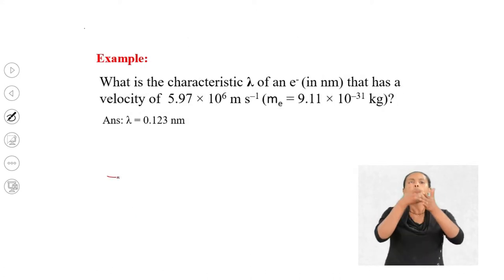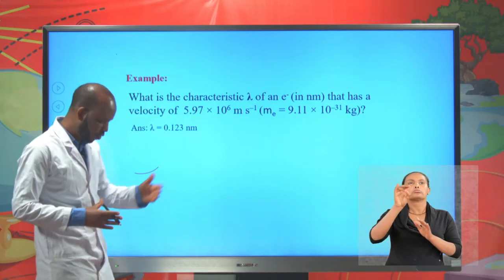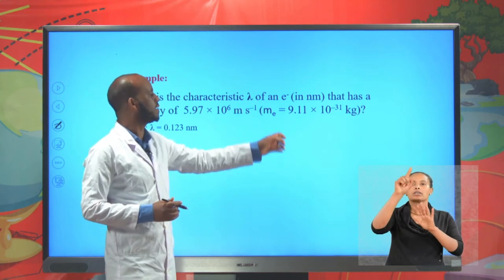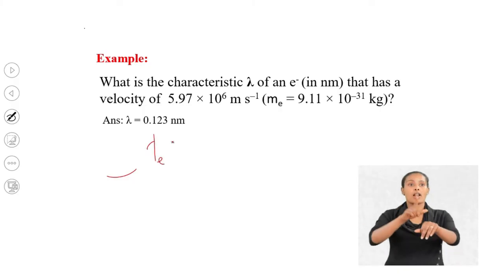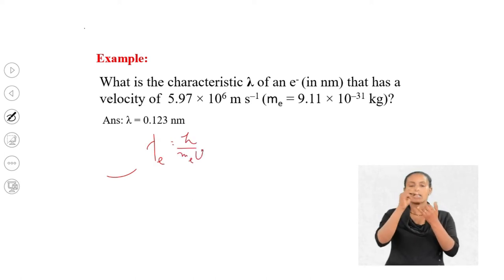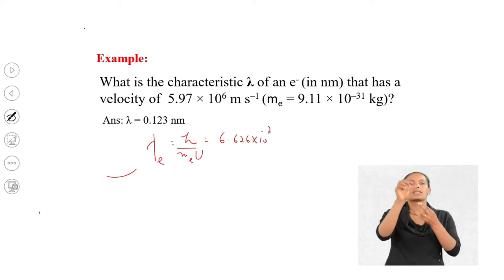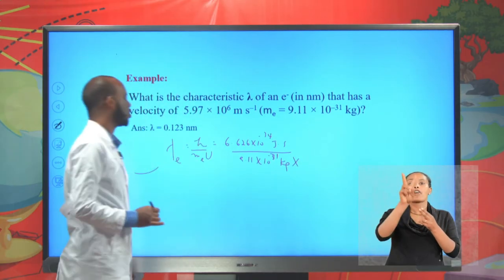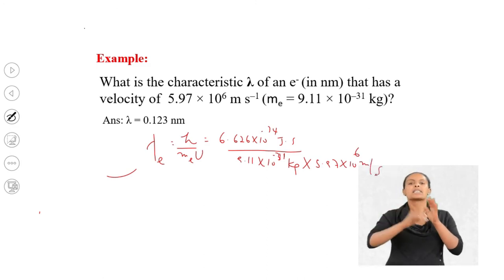Example. What is the characteristic wavelength of an electron, in nanometers, that has a velocity of 5.97 × 10⁶ m/s? The mass of an electron is 9.11 × 10⁻³¹ kg. We are asked to calculate the wavelength of an electron using λ = h / (m × v).